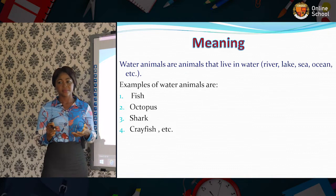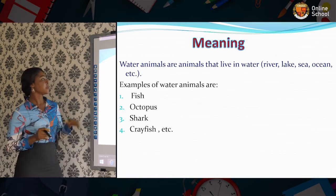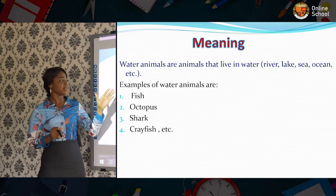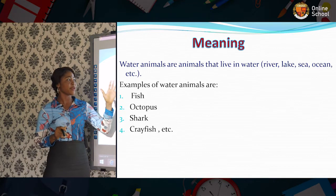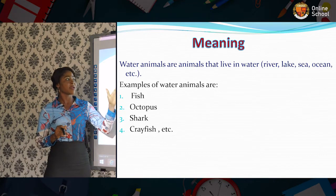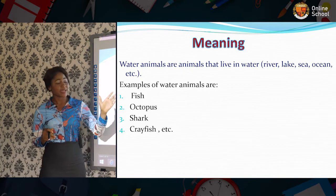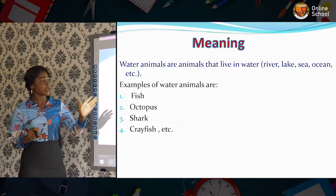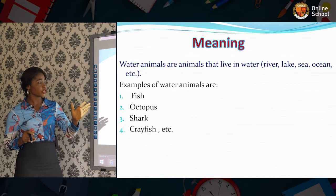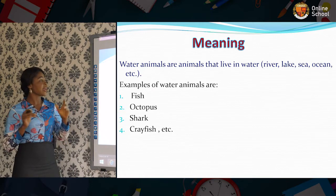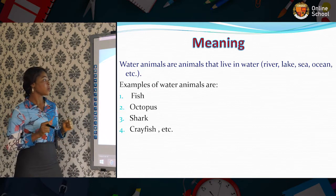Let me read it again. Water animals are animals that live in water, like river, lake, sea, ocean, etc. Because we have other waters.